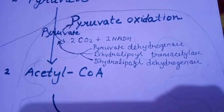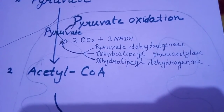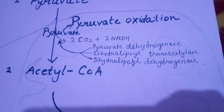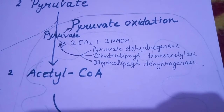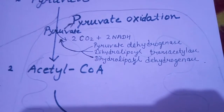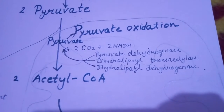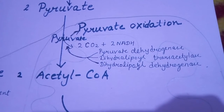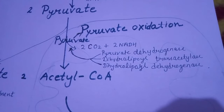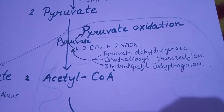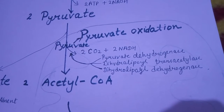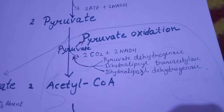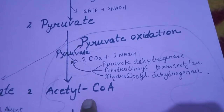The three enzymes are: first, pyruvate dehydrogenase; second, dihydrolipoyl transacetylase; and third, dihydrolipoyl dehydrogenase. These three enzymes are collectively called the pyruvate dehydrogenase complex, which is very important and is asked many times in the CSIR NET exam.